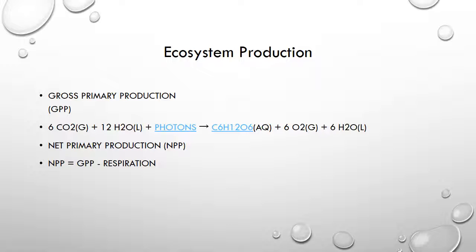Another term is net primary production, which is GPP decreased by respiration when the plant uses energy in metabolism. So what are the primary producers in the lakes?